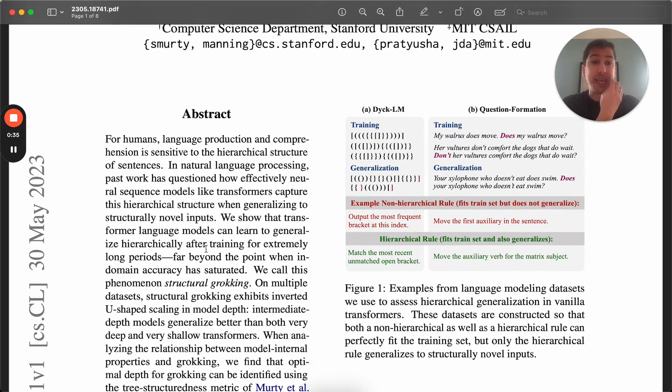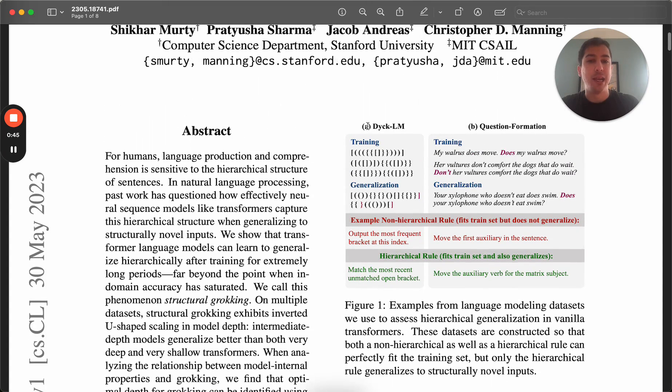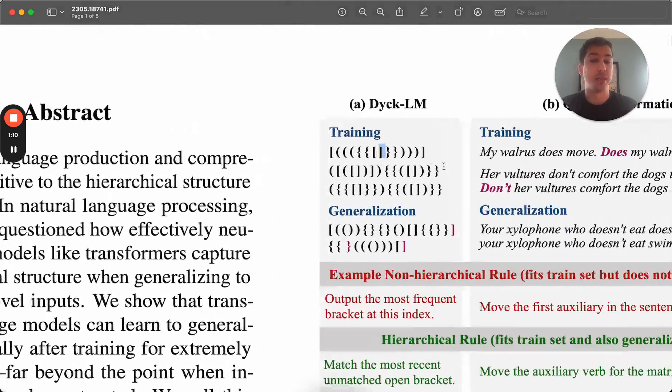And they find that indeed it can, but that there are certain constraints that make it happen, and sometimes it'll work and sometimes it won't. So they look in particular at a couple of data sets, one that is very focused on abstract structure, so open and close parentheses of different types, and can the model learn to predict the proper closing parentheses given a prefix? For example, you'd be given this piece here and asked to generate the proper closing parentheses, which would be this closing square bracket.